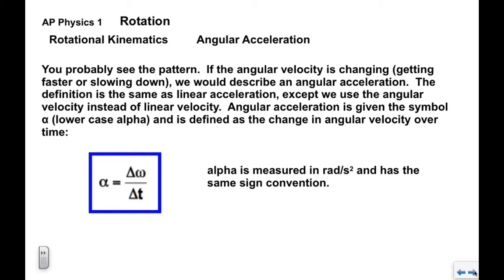If the angular velocity is changing — getting faster or slower — we describe it as having an angular acceleration. The definition is the same structure as before, but using angular velocity instead of linear velocity. Angular acceleration is given the symbol alpha (α), which looks a bit like a fish symbol. It's defined as the change in angular velocity over time: α = Δω / Δt, measured in radians per second squared, with the same sign convention: counterclockwise positive, clockwise negative.